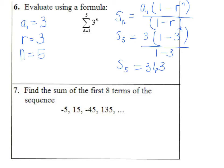Number seven is really important. Pay attention because one of the problems you can have is when you have positive, negative, positive, negative alternating signs. We're going to find the sum of the first eight terms.